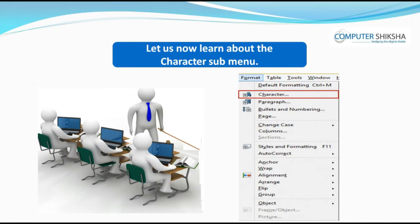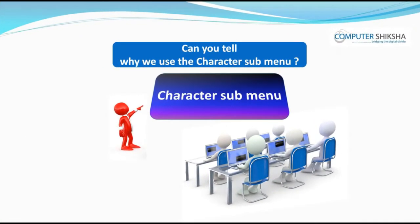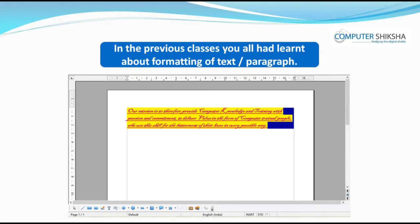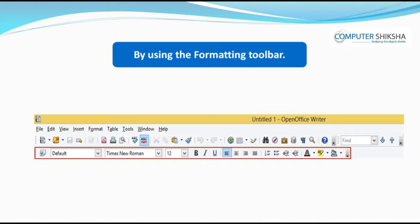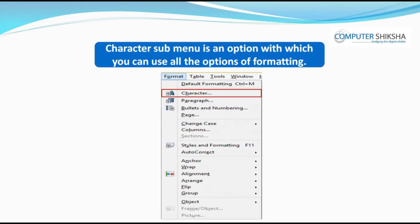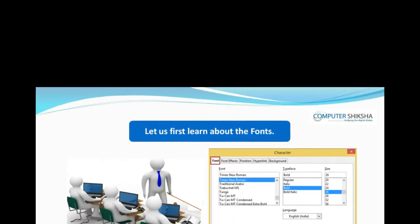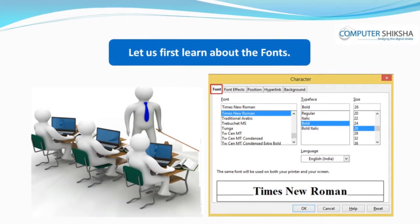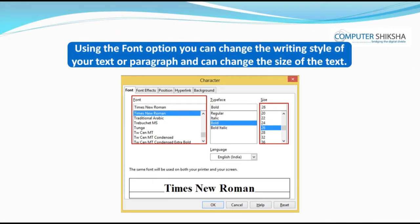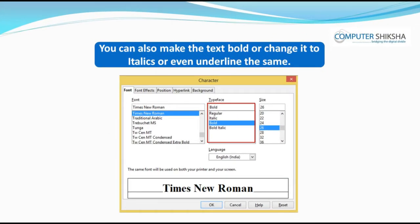Let us now learn about the character submenu. Character submenu is an option with which you can use all the options of formatting. Using the font option, you can change the writing style of your text or paragraph, change the size of the text, make the text bold, change it to italics, or even underline it.